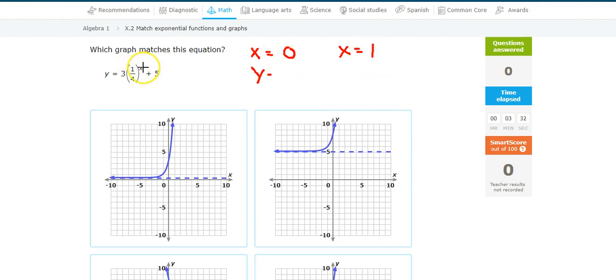At X equals 0, this is 1 fourth to the 0 power. That is 1 times 3 is 3, plus 5 is 8. So X equals 0, Y equals 8.